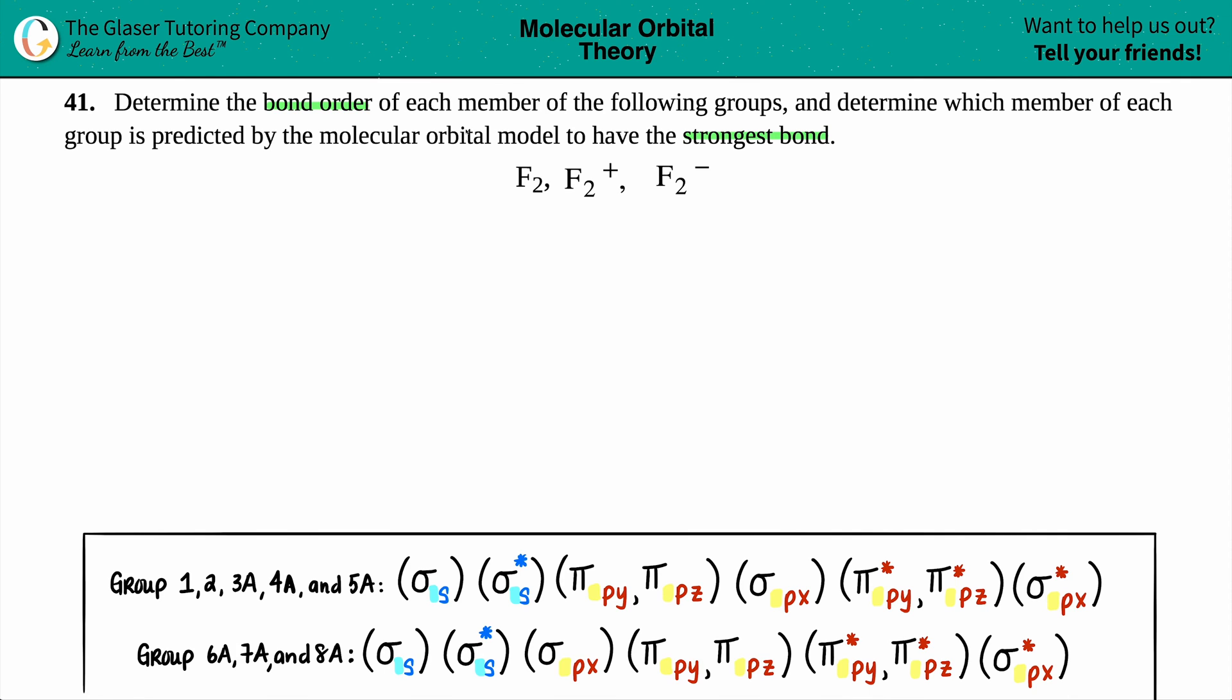Well, in order to find a bond order, this always comes from the molecular orbital configuration. So it's a big mess down here, but we will simplify it. Now bond orders, since they come from those configurations, specifically they come from valence electrons. So first things first is we just have to find out how many valence electrons we're working with.